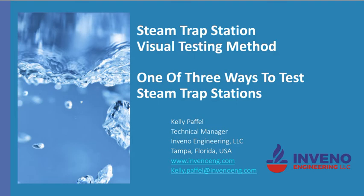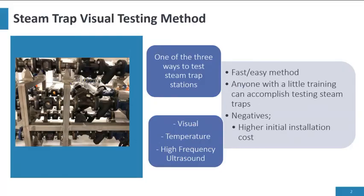Today I want to talk about steam trap station visual testing methods, which is one of the three different ways to test a steam trap. The three methods are visual, temperature, and the use of high-frequency ultrasound. Visual is a vast and easy method for testing steam traps.